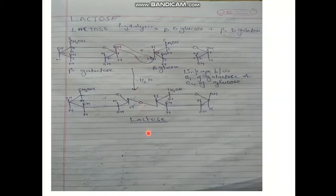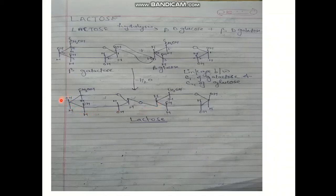In maltose, there is a straight or linear glycosidic linkage, whereas in lactose there is a cross glycosidic linkage. The galactose and glucose units are joined at carbon 1 of galactose and carbon 4 of glucose. To summarize: in glucose, the C4 OH is downward, and in galactose, the C4 OH is upward.